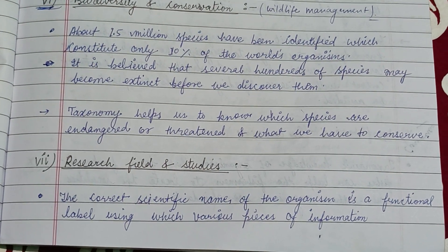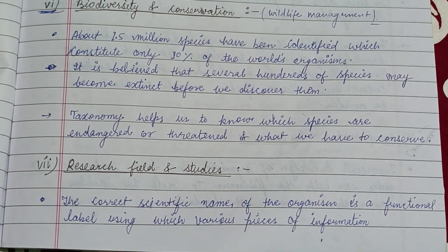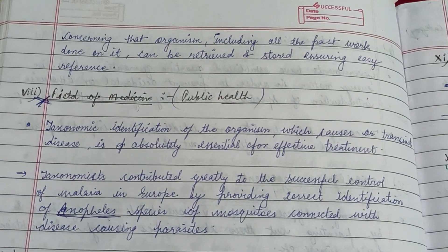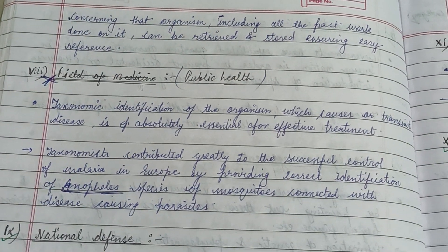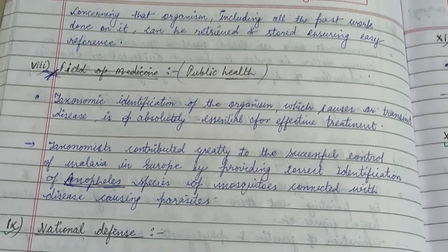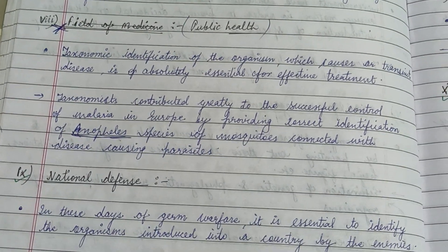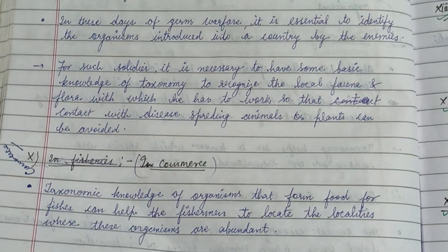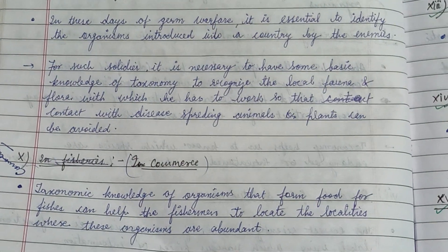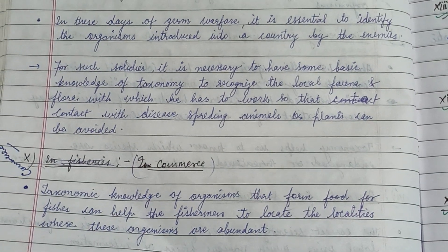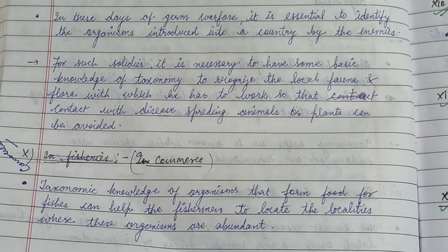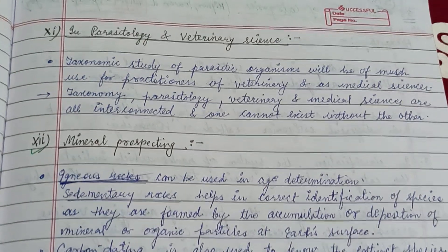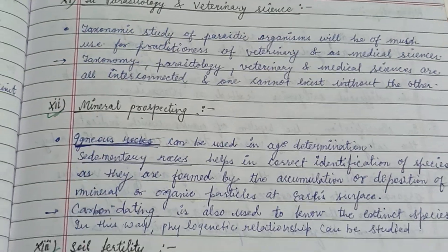In research fields and studies, the correct scientific name of an organism is a functional label using which various species information concerning that organism, including all past work done on it, can be retrieved and stored, ensuring easy reference. Other areas include public health, national defense, and commerce — for example, taxonomic knowledge of organisms that form food for fish can help fishermen locate the localities where these organisms are abundant.